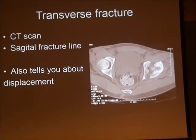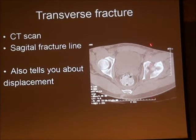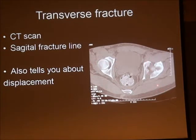It's worth mentioning again: on the axial cut of the CT scan, a transverse fracture line appears as a vertical fracture line — as discussed previously. That's important to understand.